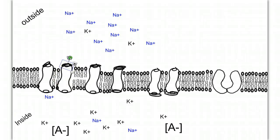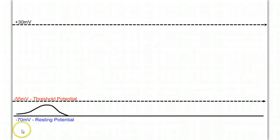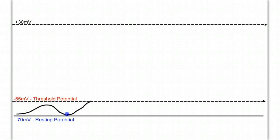If, however, there's more stimulus and more of these gates open, and more sodium is allowed to come into the neuron, then our membrane potential will get closer to reaching threshold. If there's enough stimulus such that enough sodium gates open and the voltage across the membrane reaches a certain value — in this case negative 55 — we begin a sequence of events that's going to run to completion: an all or nothing event called an action potential.